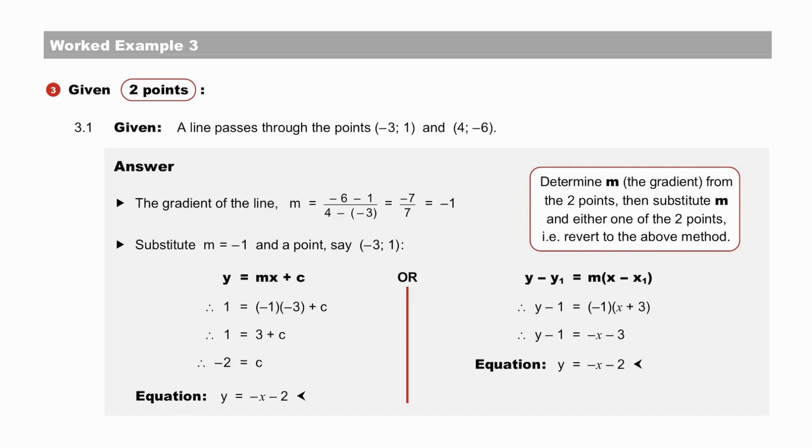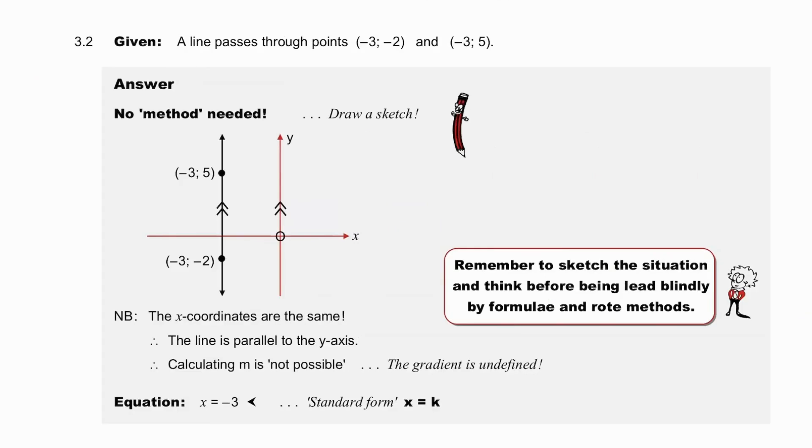Pause to check example 3. And I encourage you to continue to try both forms of the equation, y equals mx plus c, and y minus y1 equals m, x minus x1. In question 3.2, did you notice that the x coordinates of these two points were the same? No method was needed. You simply needed to draw a sketch. This is case 1, a vertical line. As you can see, the x coordinates being the same means that those two points are directly beneath each other, and that we have a case 1 line here. The equation is simply x equals minus 3, which we know, and the standard form is x equals k. y equals mx plus c just doesn't work in this example, and neither does the gradient formula work. Remember to always sketch the situation and think before being led blindly by formulae and rote methods.